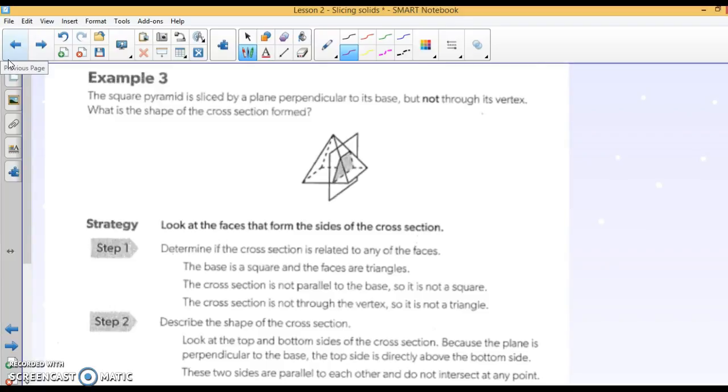Now, this one is tricky. A square pyramid sliced by a plane perpendicular to its base, but not through its vertex. So perpendicular to the base, so that means it's going straight down through the bottom of the base, but it's not going through its vertex. So the shape is going to be right there. What is that? It will be a trapezoid.